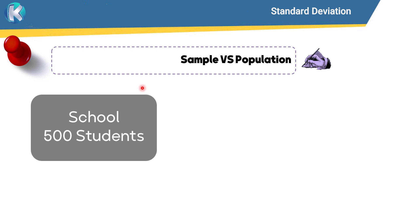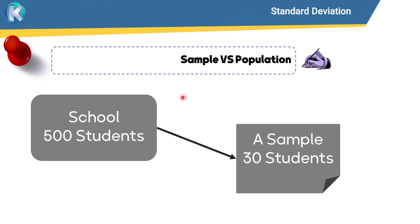One approach is to study each student individually — all 500 students. But as you can see, it takes a lot of time and effort. The other approach is to take a sample; for example, a sample of size 30.